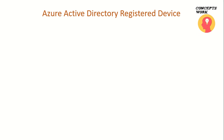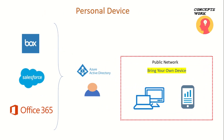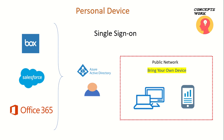For any machine to be an Azure AD registered device, the user has to register that machine first, which creates a device object in Azure Active Directory. The purpose behind this is to provide single sign-on on devices that belong to users - meaning users can bring their personal laptops, register them in Azure AD, get single sign-on, and you can also control the device identity. I'll also show what happens when you disable a device object.